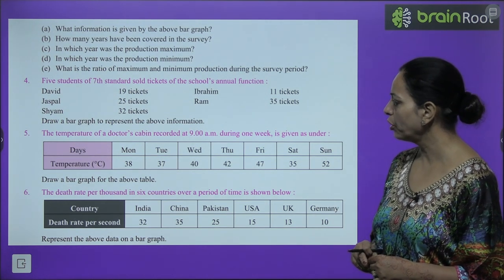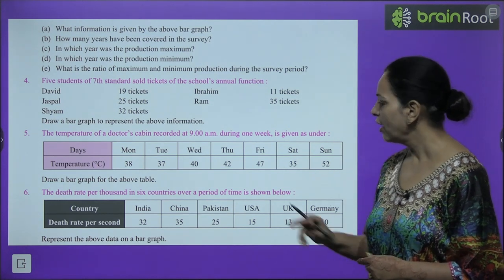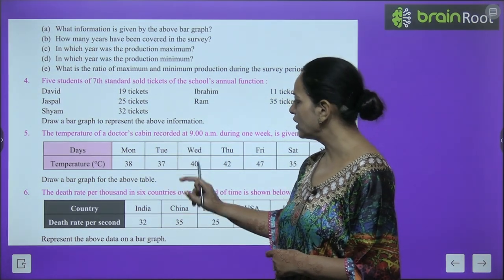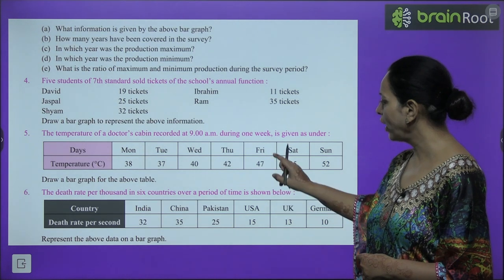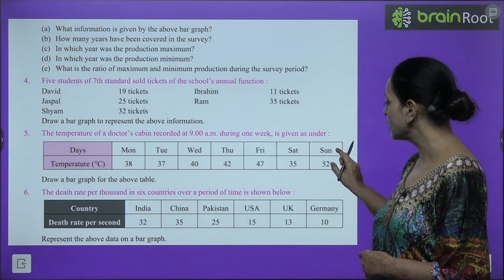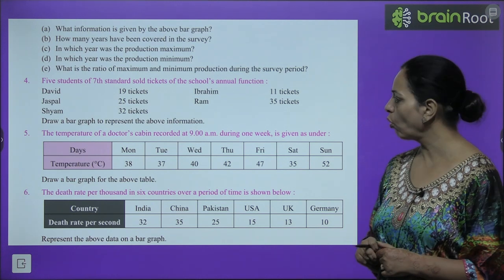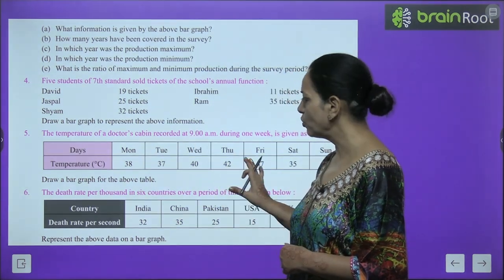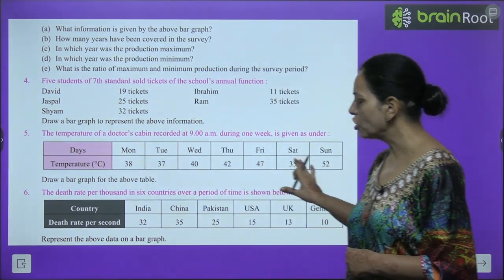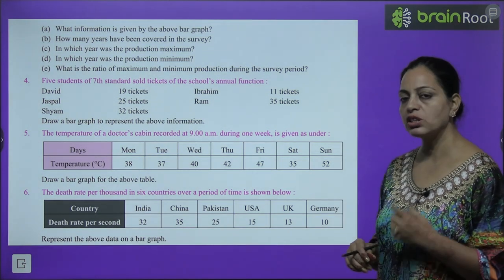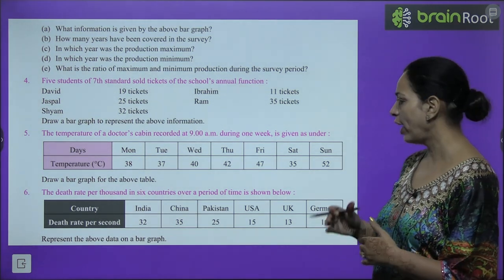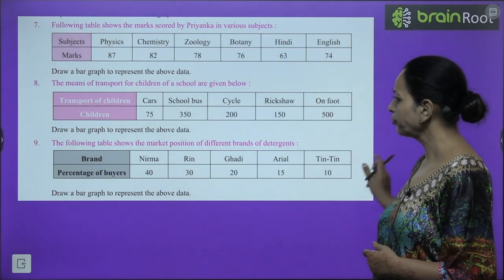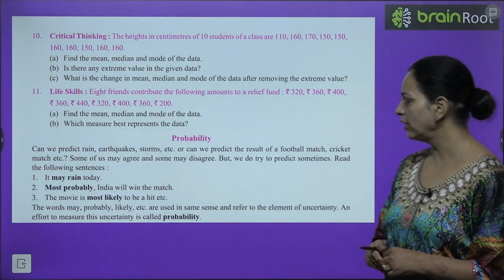Question 5 from Exercise 4.2: The temperature of a doctor's cabin recorded at 9 a.m. during one week — Monday: 38, Tuesday: 37, Wednesday: 40, Thursday: 42, Friday: 47, Saturday: 35, Sunday: 52. To draw this bar graph: take x-axis for days (Monday, Tuesday, etc.) and y-axis for temperature. Choose a scale of 10, 20, 30, 40 or 5, 10, 15, and mark the bars accordingly. It is very easy and interesting.